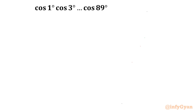Hello everyone, welcome to InfiGand. In this very exciting video on trigonometric expressions, we are going to simplify one very interesting expression with cosine. The expression is cos 1° × cos 3° × cos 5° up to cos 89°. We have to evaluate this.